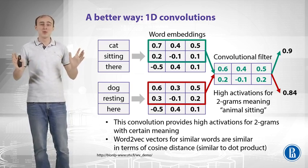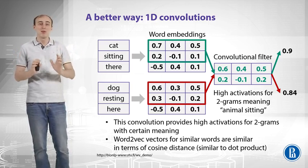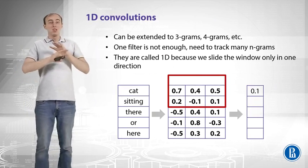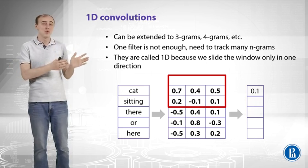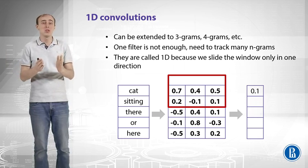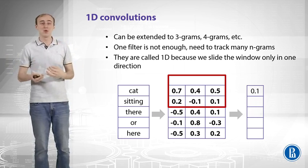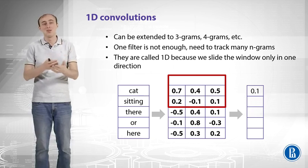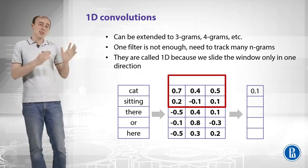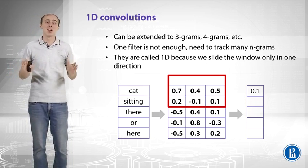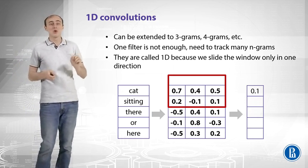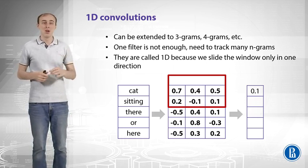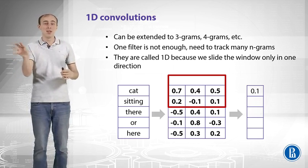This is pretty powerful — you don't need a lot of columns for all possible bigrams; you just look at pairs of word embeddings and learn convolutional filters that capture meaningful features. This extends easily to trigrams, 4-grams, and any n-gram. Unlike bag of words, your feature space won't explode — you just change the filter size. You also need many filters to track different n-gram meanings, and these are called 1D convolutions because the window slides in only one direction, unlike image convolutions which slide in two directions.